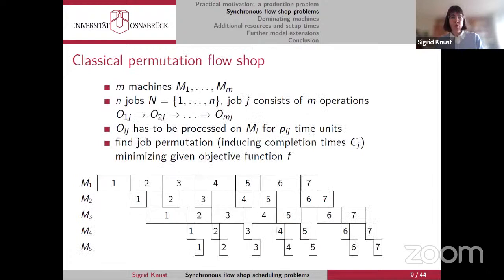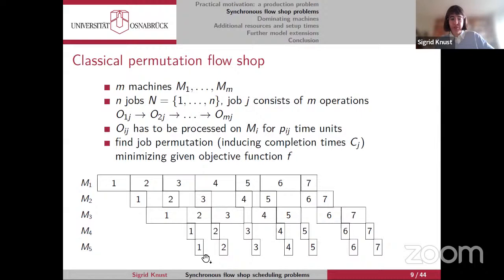I think all of you know the classical flow shop problem and the classical permutation flow shop. For the notation: we have M machines (here five), N jobs (here seven), each job consists of M operations sequenced in order, and operation O_ij has to be processed on machine i for a certain amount of time units. The objective in the permutation flow shop is to find one permutation for the jobs—the same on all machines—minimizing a given objective function based on completion times of the jobs.